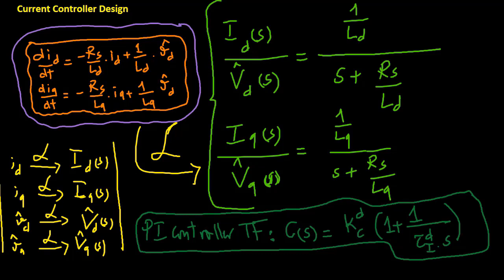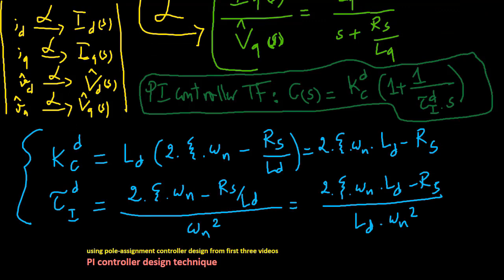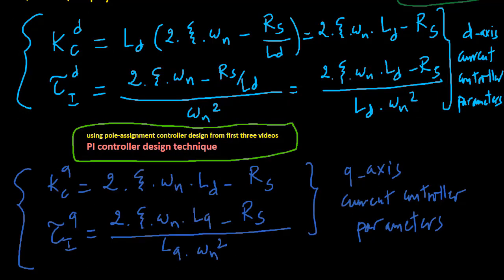Based on the design approach introduced in the first videos in this playlist, the proportional gain and the integral time constant for the PI controller are determined using pole assignment controller design. Similarly, these are the PI controller parameters for the control of q-axis current.